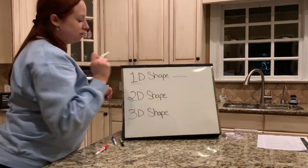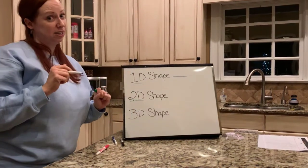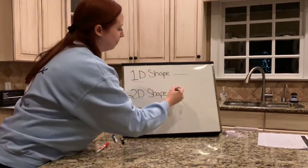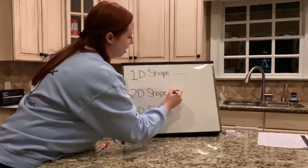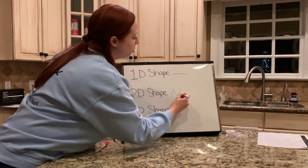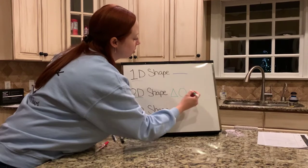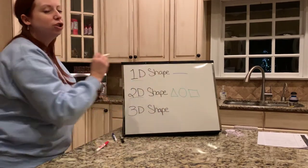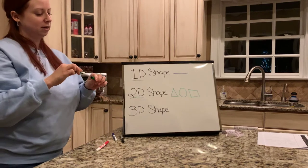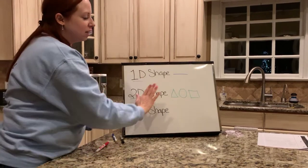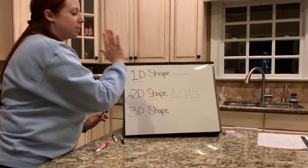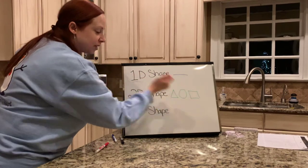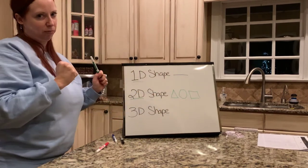A two-dimensional shape — a 2D shape — those are the shapes you're used to drawing. Things like your triangle, your circle, your square. Those are 2D shapes. You're giving them some angles, some edges, or curves, but they're still flat on the paper.